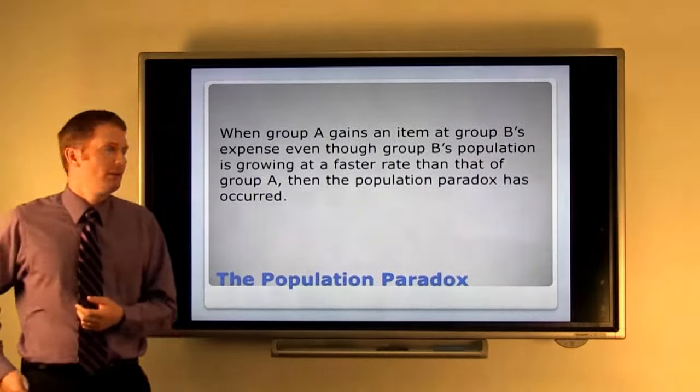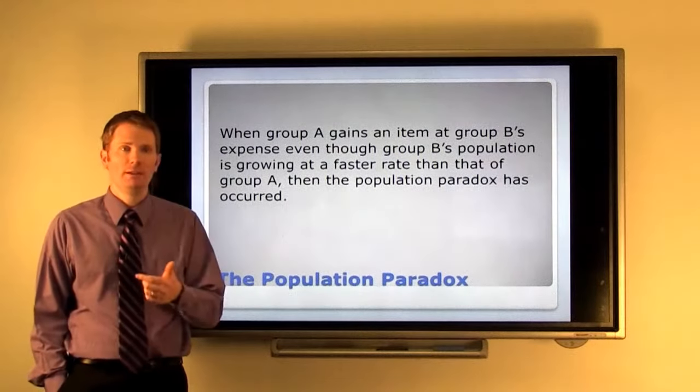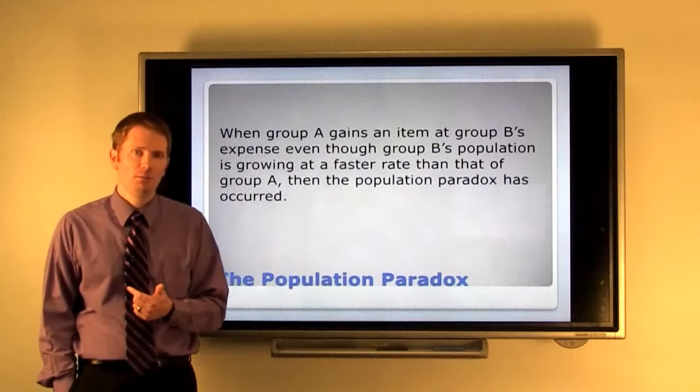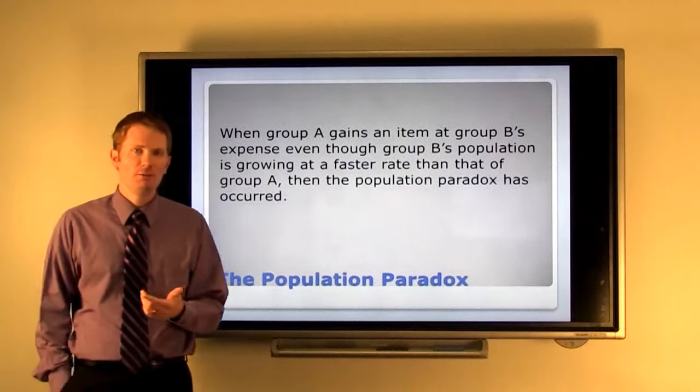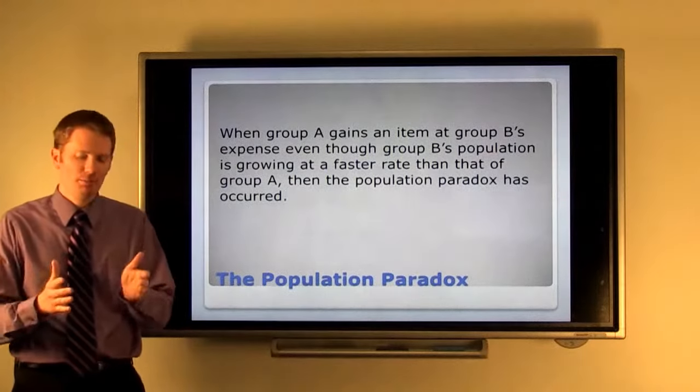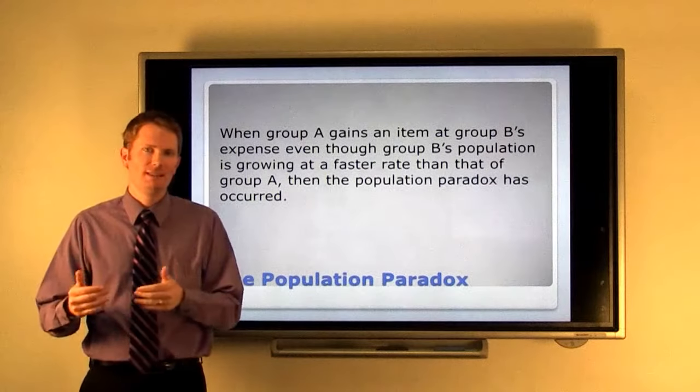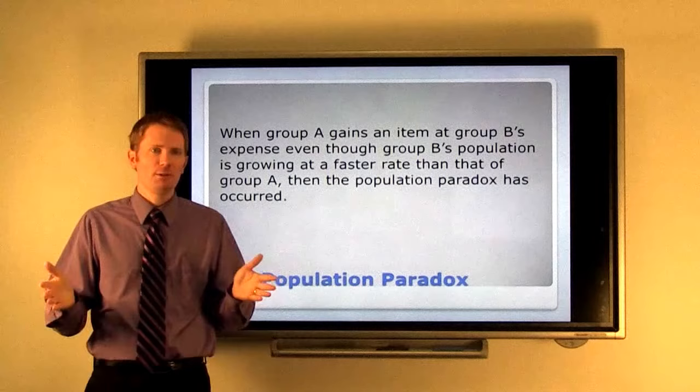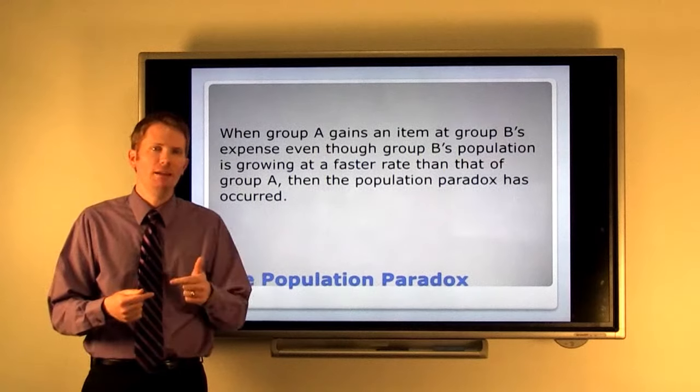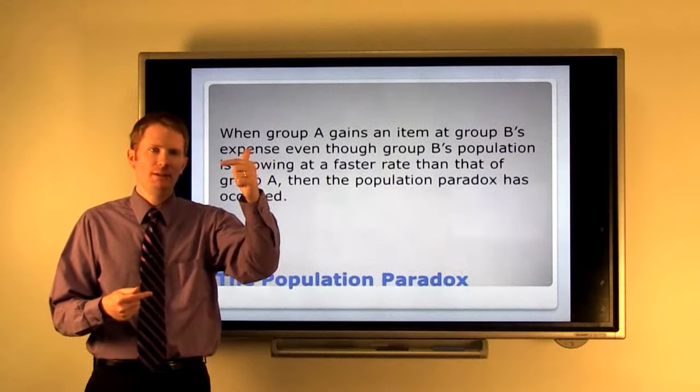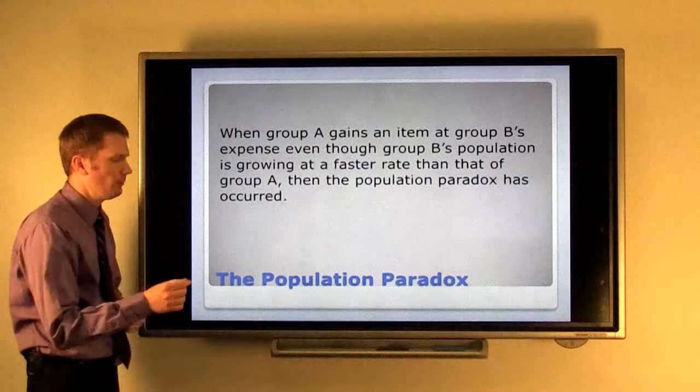The second one is population paradox. This states that when group A gains an item at group B's expense, even though group B's population is growing at a faster rate than that of group A, then the population paradox has occurred. This was discovered after the 1900 census. Virginia's population was growing at a rate of 1.07 percent per year, while Maine's population was only growing at a rate of .67 percent per year. The country's population was growing faster than both of them, but after one year, after that census, the standard quota for Maine would end up giving a larger decimal piece than that of Virginia and Maine would deserve the extra representative if we were using Hamilton's method. Virginia didn't like that.